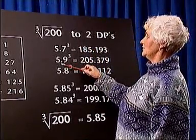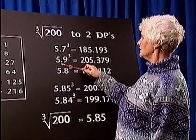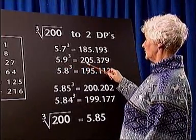We will try 5.9 cubed. 5.9 cubed is equal to 205.379.